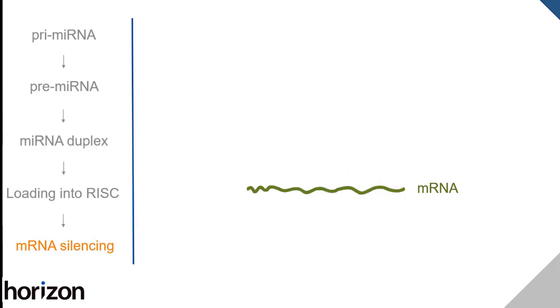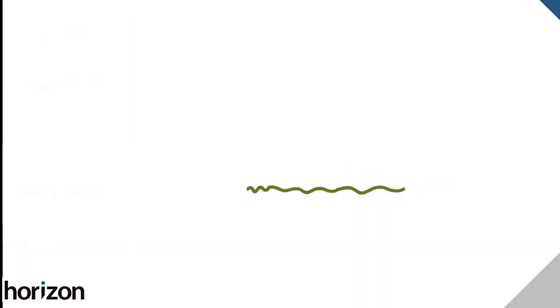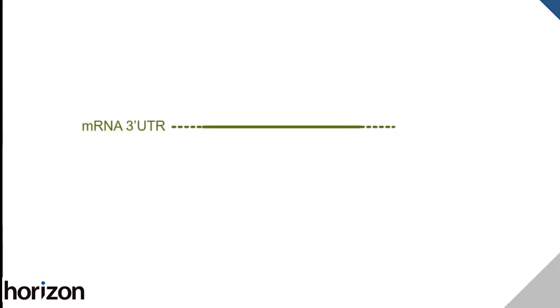Let's look at this in more detail. Usually, microRNAs bind to a microRNA recognition element in the 3' untranslated region of a target mRNA. Gene regulation can happen through partial complementarity between the microRNA recognition element and as few as 6 or 7 nucleotides in the seed region at the 5' end of the microRNA.